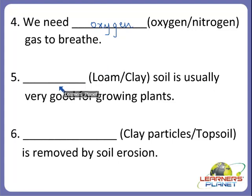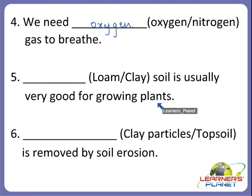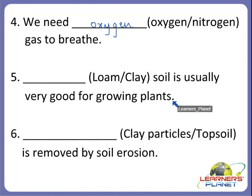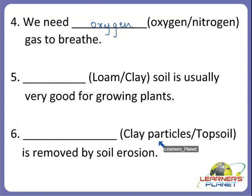Dash soil is usually very good for growing plants. What kind of soil is usually very good for growing plants? Is it loam soil or clay soil? It is the type of soil which is very fertile, full of nutrients, and provides nutrients to the plant so that it can grow very well. It is the loam soil. Loam soil is usually very good for growing plants.